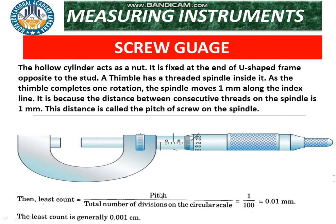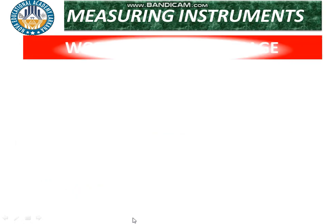The least count of the screw gauge equals the pitch divided by the total number of divisions on the circular scale: 1 mm ÷ 100 = 0.01 mm. Comparing with the Vernier Caliper: its least count is 0.1 mm, whereas the screw gauge least count is 0.01 mm. Converting to centimeters: 0.01 mm = 0.001 cm.